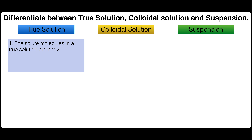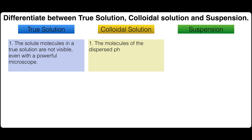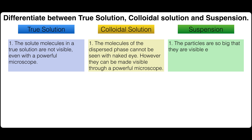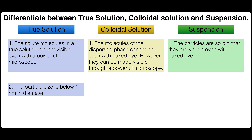Differentiate between true solution, colloidal solution, and suspension. The solute molecules in true solutions are not visible even with a powerful microscope. The molecules of the dispersed phase in a colloidal solution cannot be seen with the naked eye; however, they can be made visible through a powerful microscope. The particles of a suspension are so big that they are visible even with the naked eye.